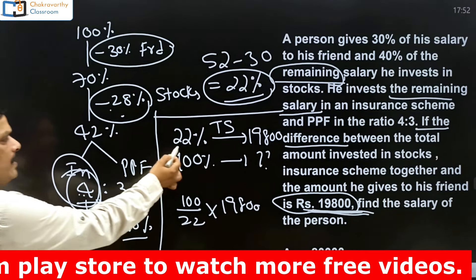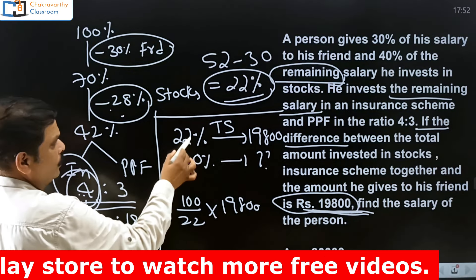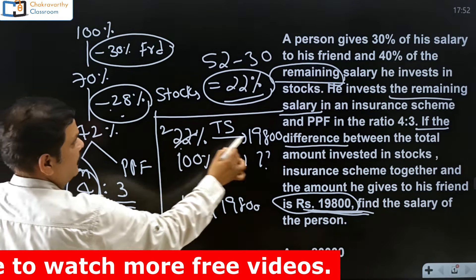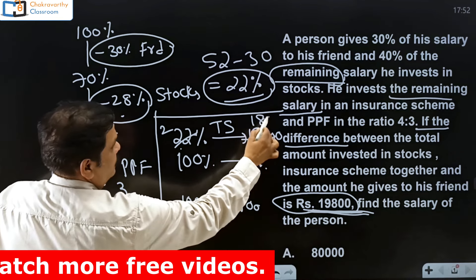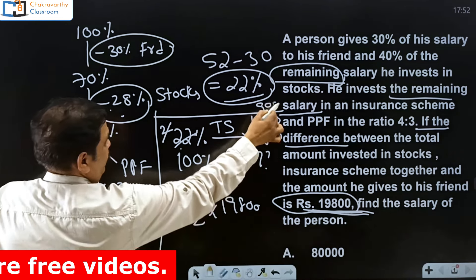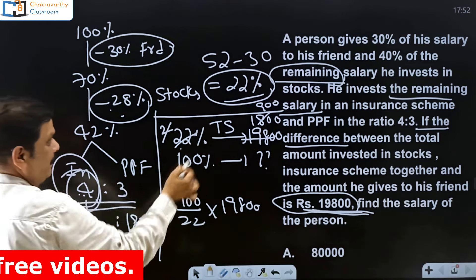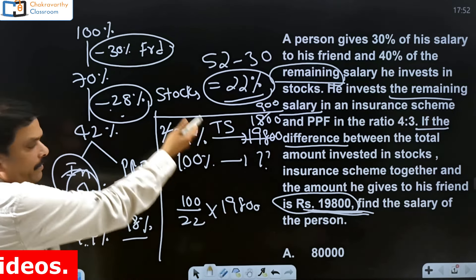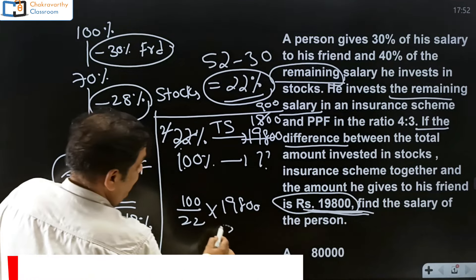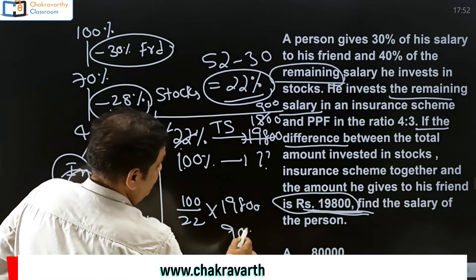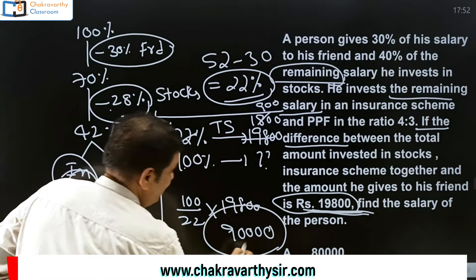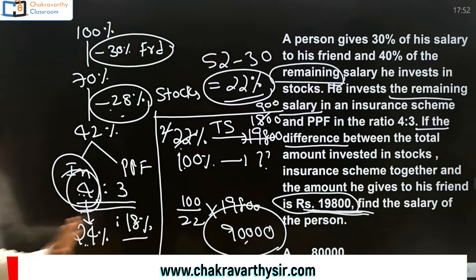Direct simplification: 100 divided by 22 into 19,800. This is 11 two times. 11 ones, 11 eights, two zeros — then two 900s. So my answer is 100 into 900. After 900, two zeros. My answer is 90,000.